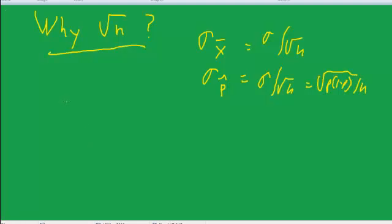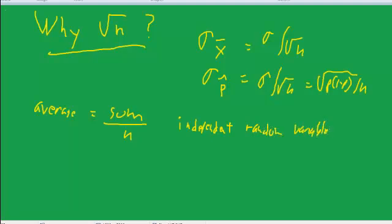Well, the average is the sum of all the values divided by n. That's the definition. If we're taking it from a nice random sample, they're all independent random variables with the same sigma, the same standard deviation.